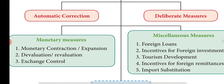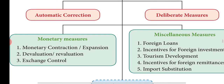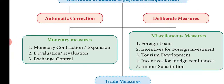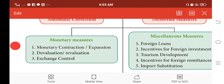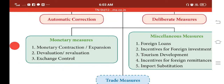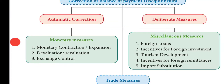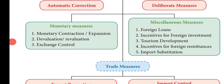Let's look at automatic correction and then deliberate measures. Deliberate measures include trade measures, and monetary measures such as monetary contraction and expansion.